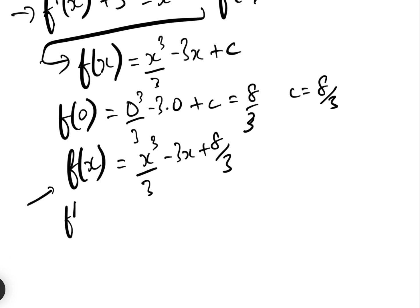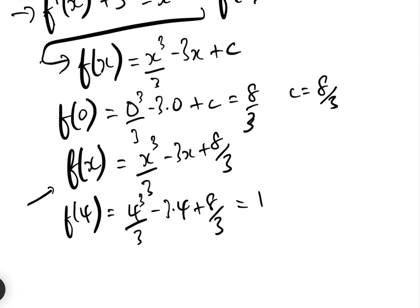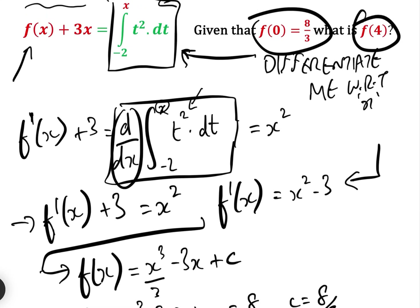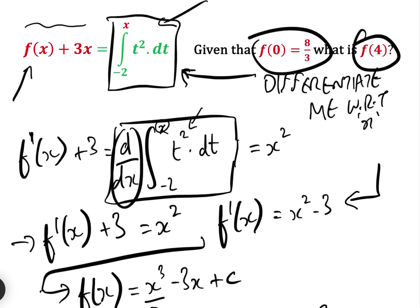All we need to do now is put four in: f(4) = 4³/3 − 3×4 + 8/3, which equals twelve. And that is the answer to this question.